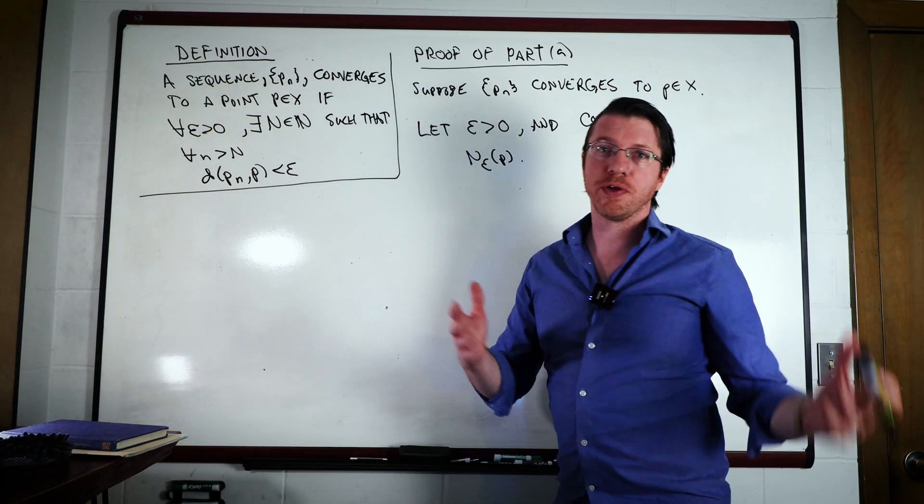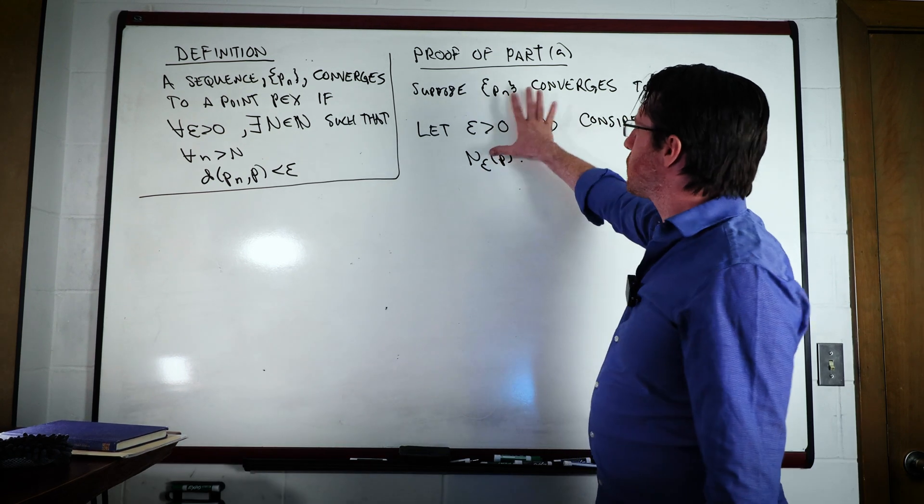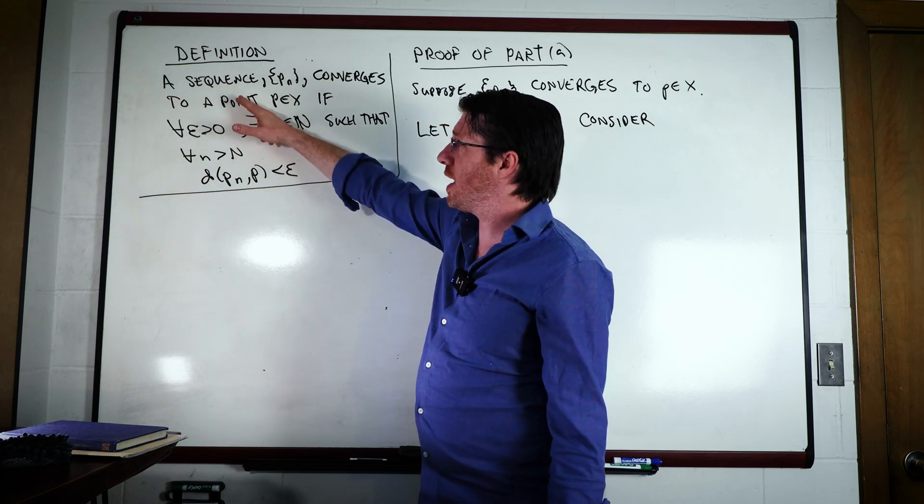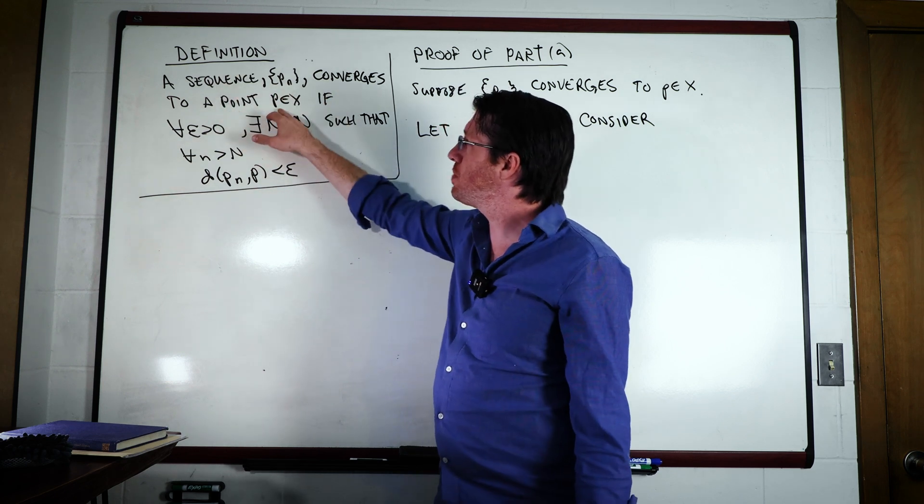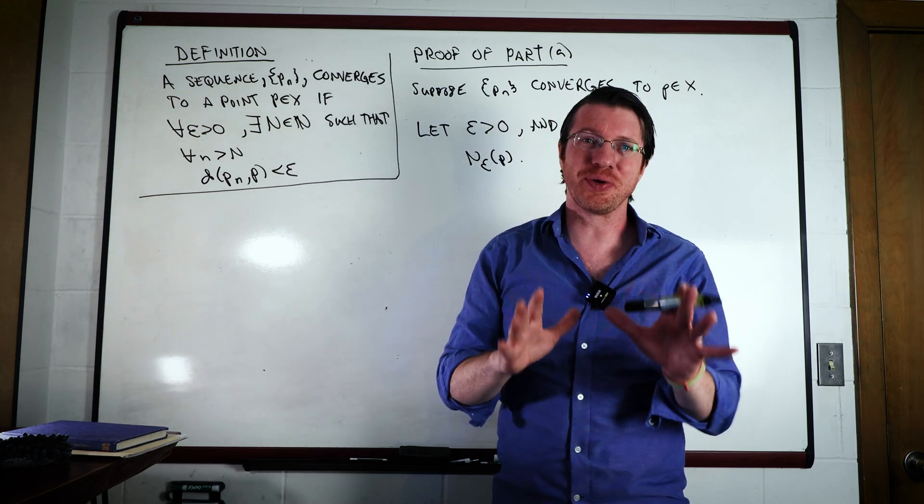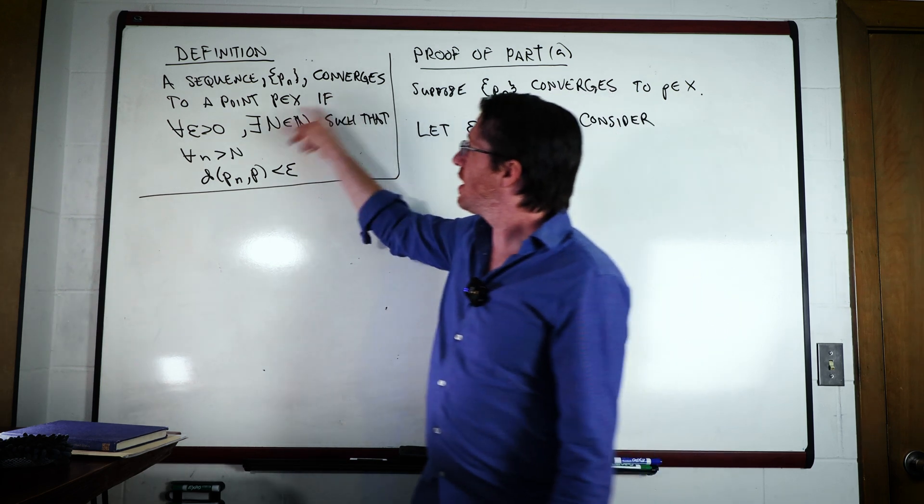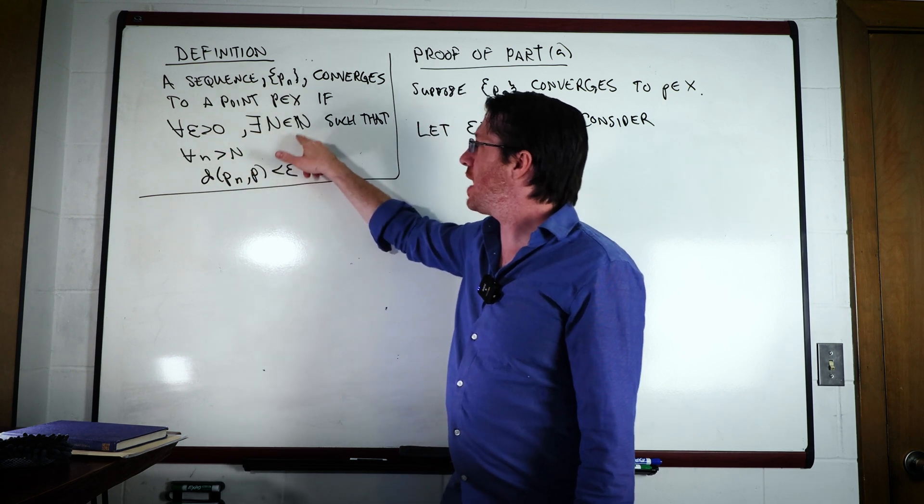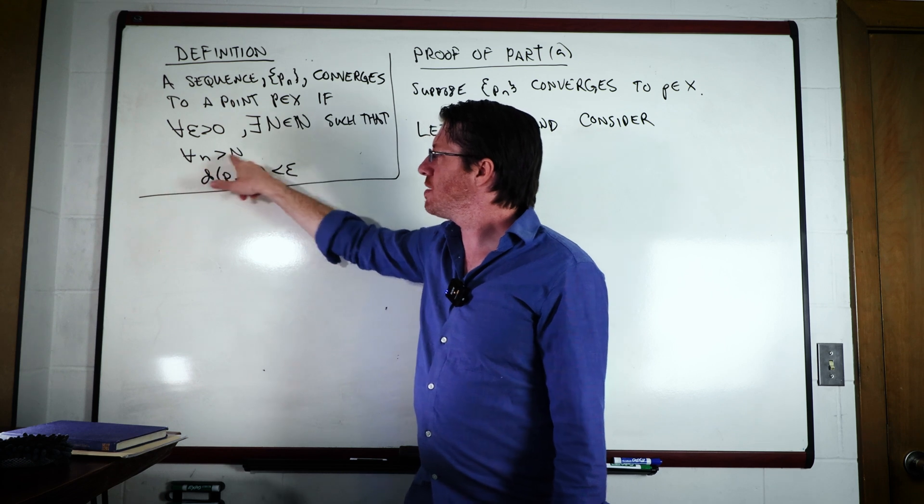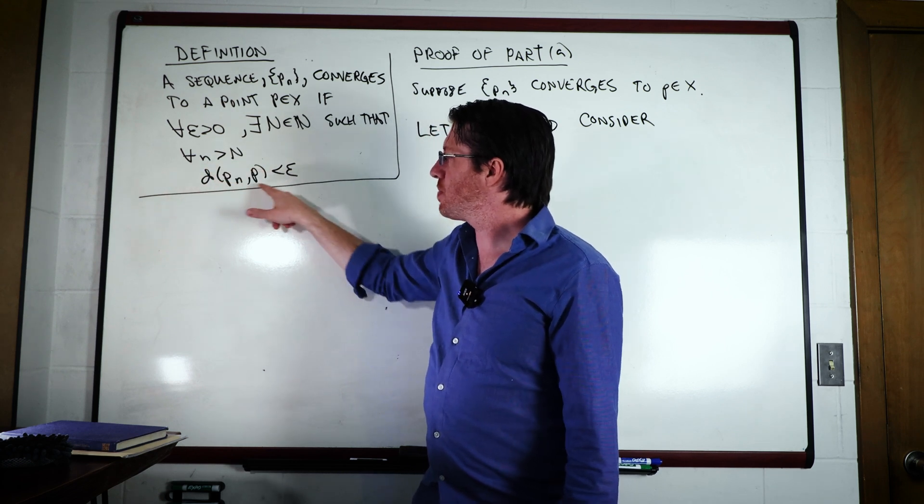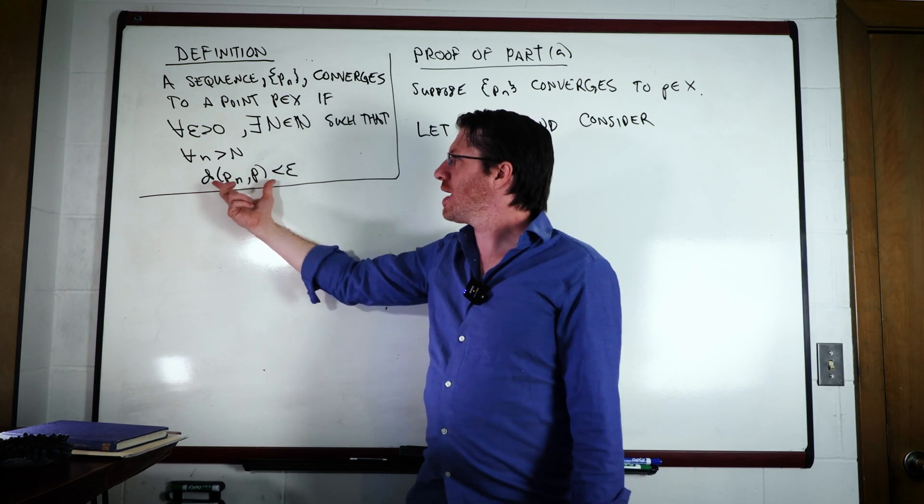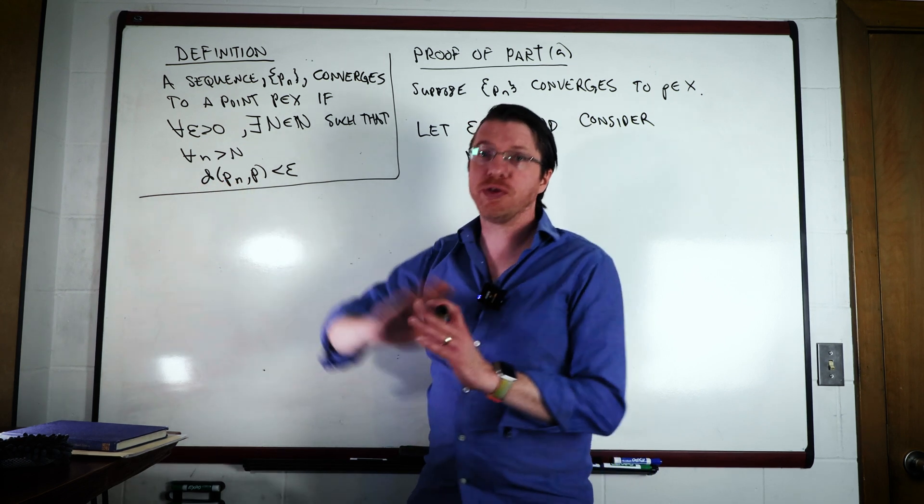Okay, so why don't we just go ahead and prove a couple of these ideas. So I'm going to prove at least one direction of this to make it kind of clear. So you can start with a definition. So we have a sequence PN converges to a point P in X if, and now this is something that you just internalize during analysis. You'll write this so many times. If for all epsilon greater than zero, there exists some N in our natural numbers such that for all little n bigger than N, we are eventually going to be inside an epsilon neighborhood of P.